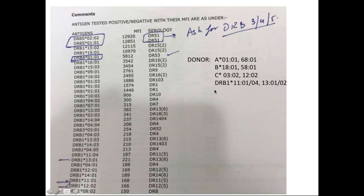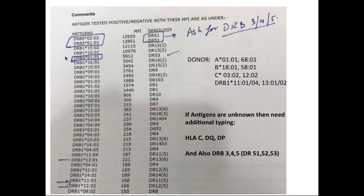The same donor-recipient pair also had DR antibodies — but these were DRB5 and DRB4. We don't routinely do DRB3/4/5 typing. So if a recipient has DRB3/4/5 antibodies, make sure you get donor DRB3/4/5 typing to avoid being surprised and to know the full risk profile. If antigens are unknown and the recipient has antibodies present, get additional typing — this could also apply to HLA-C, DQ, and DP, because the single antigen bead report will give you those antibodies as well.